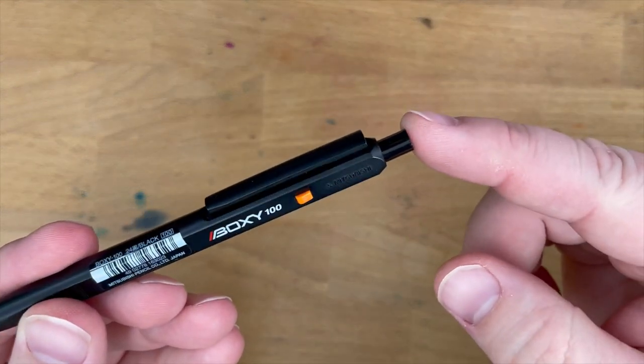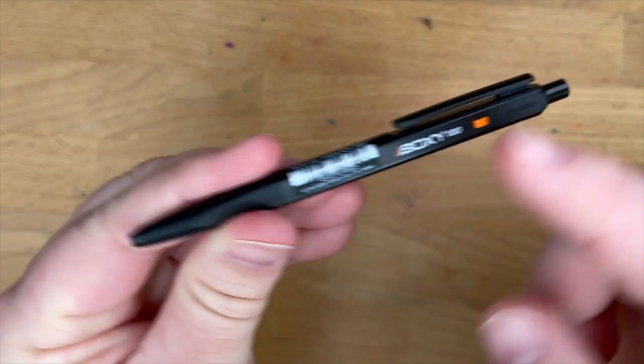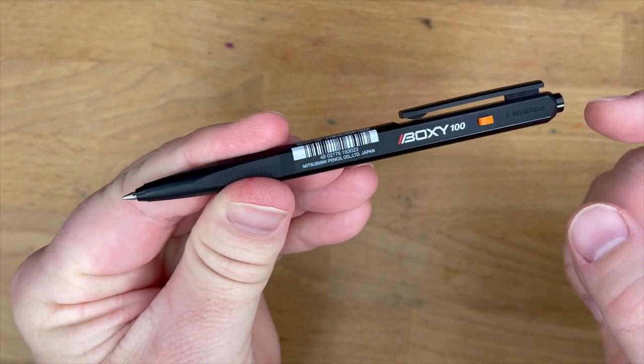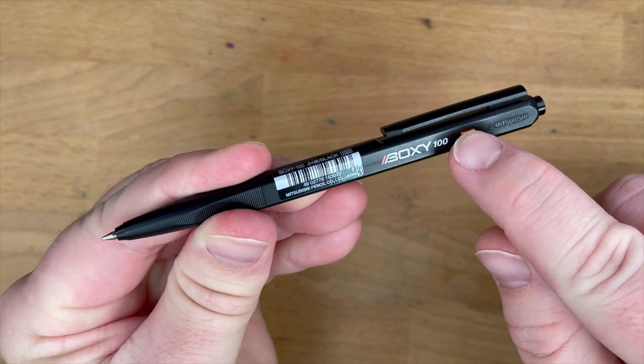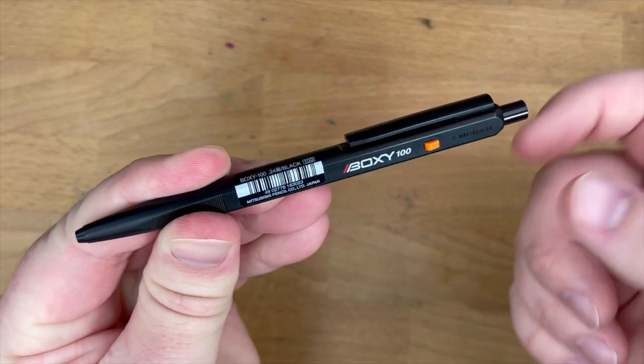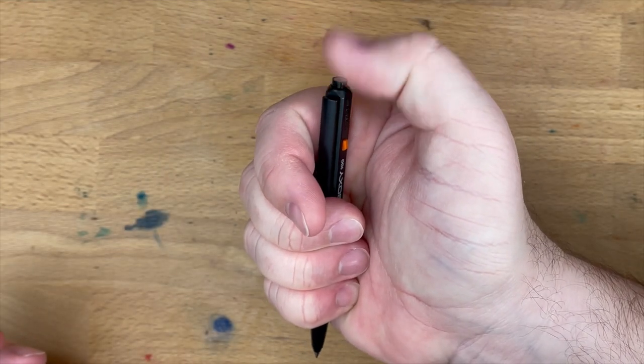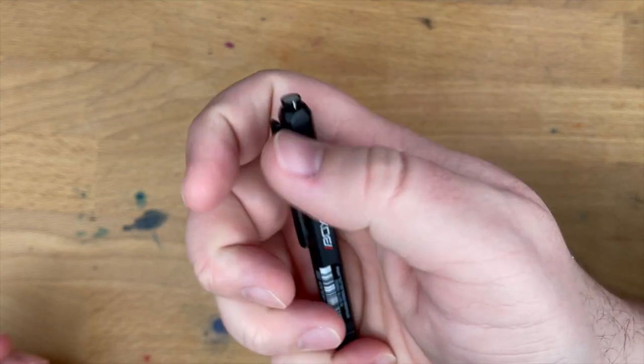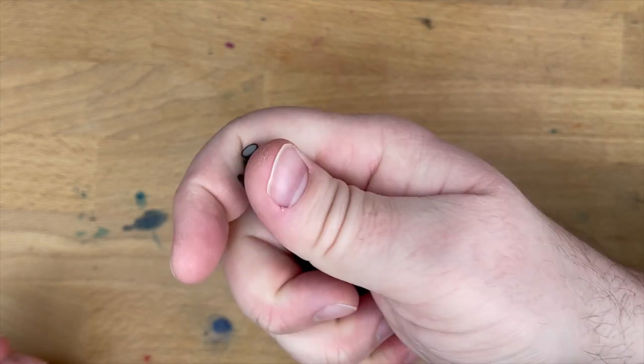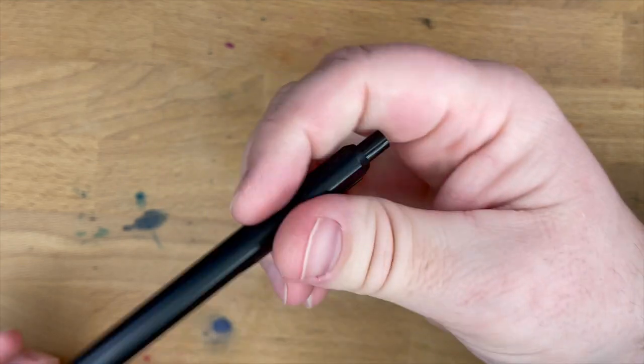The other thing that it has is a very interesting mechanism, which is this side click, so you push down here to expose the point, and then you push this little orange switch, pop, to pull it back in. So instead of having a click pen where you just click this over and over again, it's got this side click, which is a really interesting mechanism. It's very fidgety. I like it.